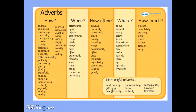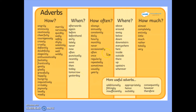Here is a list of lots of different adverbs separated into groups: how adverbs, when, how often, where, or how much. So for example you could say, it snowed yesterday. Or, the boy behaved naughtily occasionally.